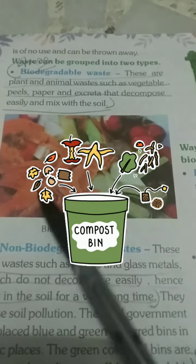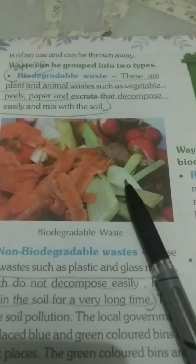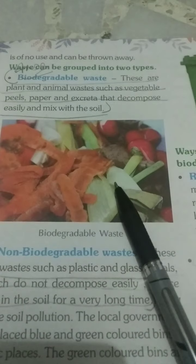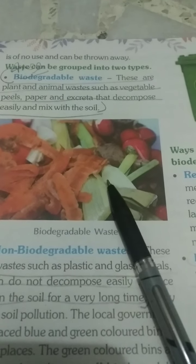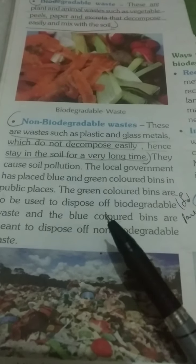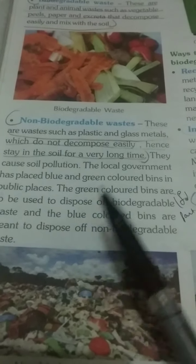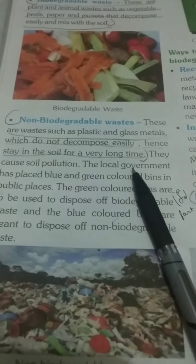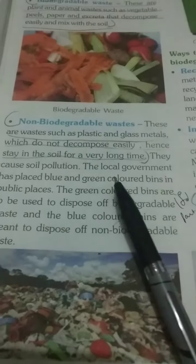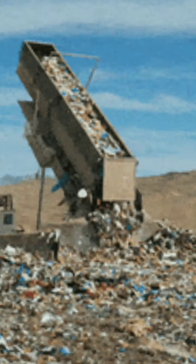As you can see in this picture, biodegradable waste is shown. Non-biodegradable waste includes waste such as plastic, glass, and metals which do not decompose easily and stay in the soil for a long time. They cause soil pollution.